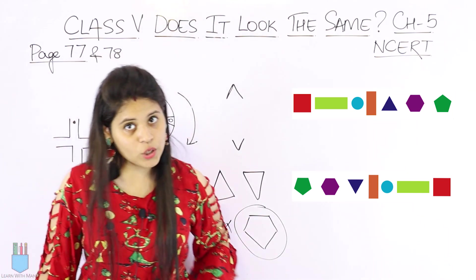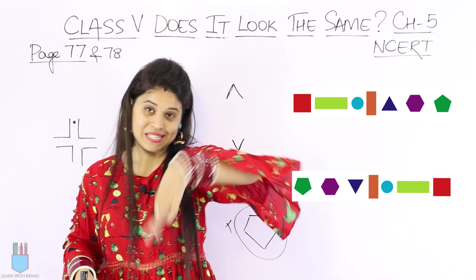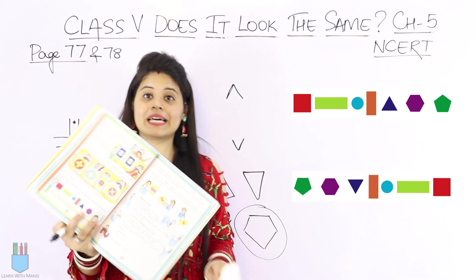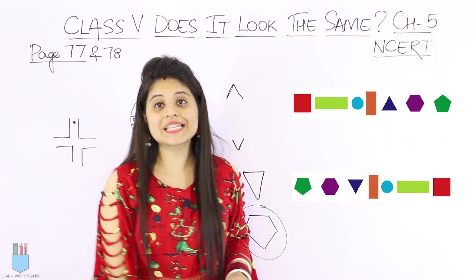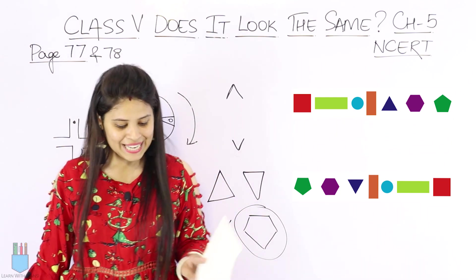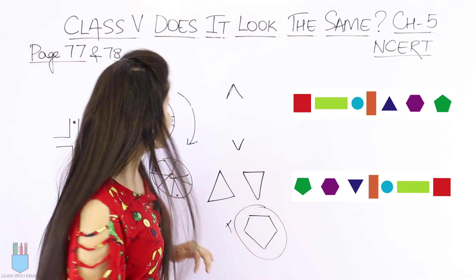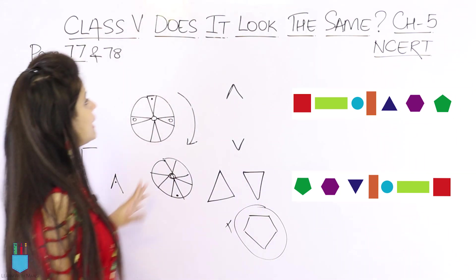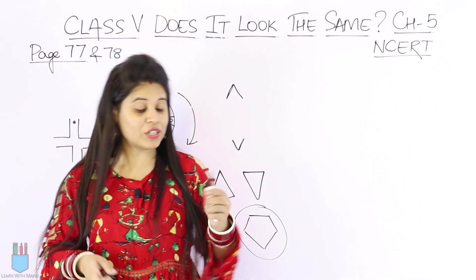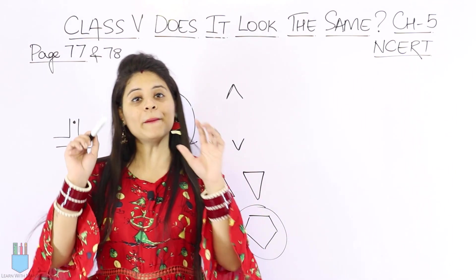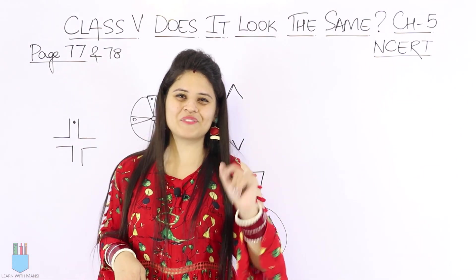I hope that is clear. This is printed in the book — you can simply look at your book like this, turning it, to know which shape stays the same after a half turn and which does not. We have now covered pages 77 and 78. For the next page, you will need to watch a new video — the link will be in the description below. Follow that link and meet me in the next video. Bye-bye for now.